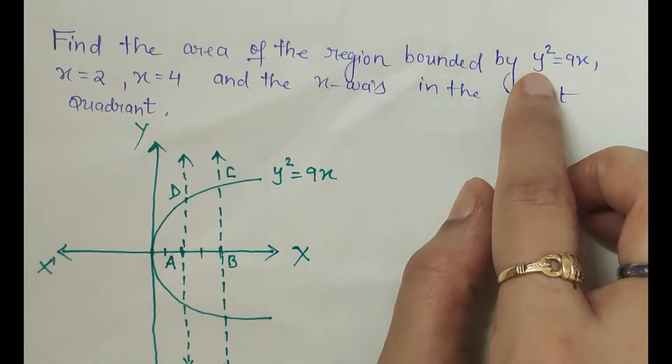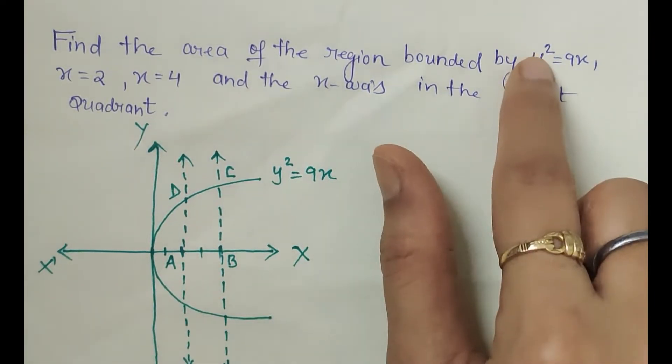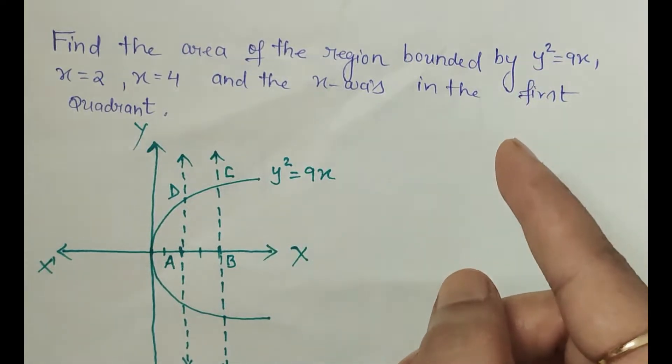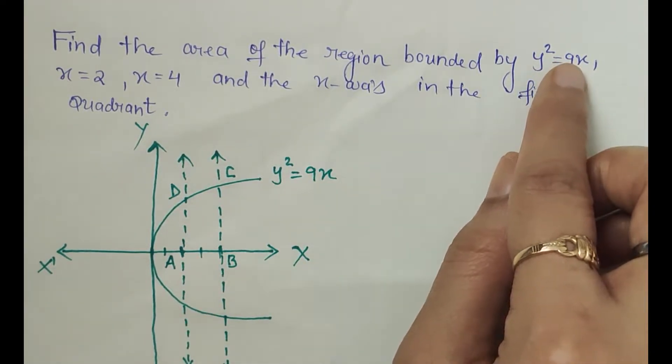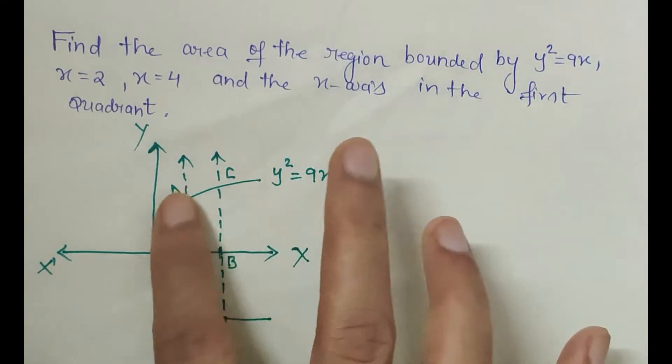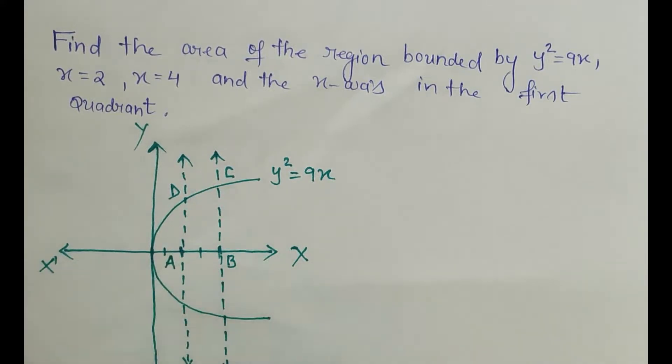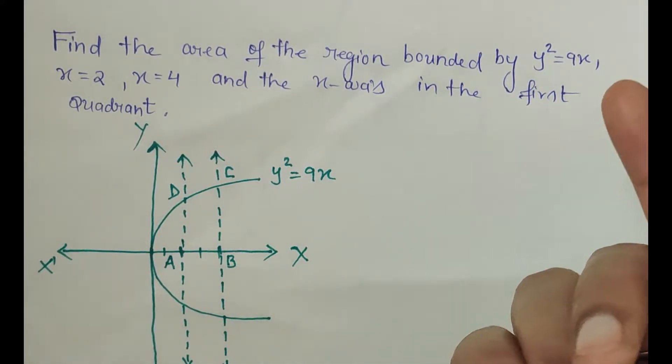Whenever it is y², the parabola is symmetric along the x-axis, and whenever it is x², the parabola is symmetric along the y-axis. The positive or negative sign denotes whether it will be towards the positive side or the negative side, or upward or downward as the case may be.